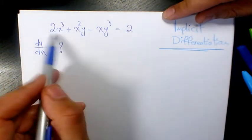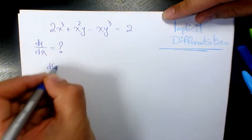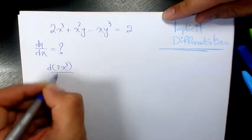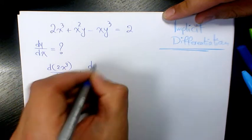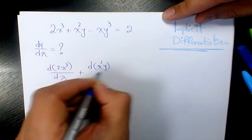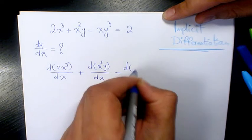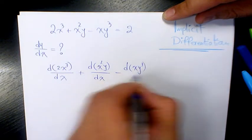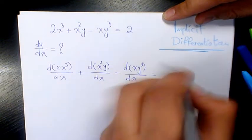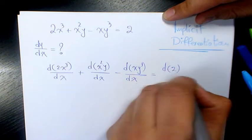What I'm going to do is take the derivative of 2x³ with respect to x, plus the derivative of x²y with respect to x, minus the derivative of xy³ with respect to x, equals the derivative of 2 with respect to x.